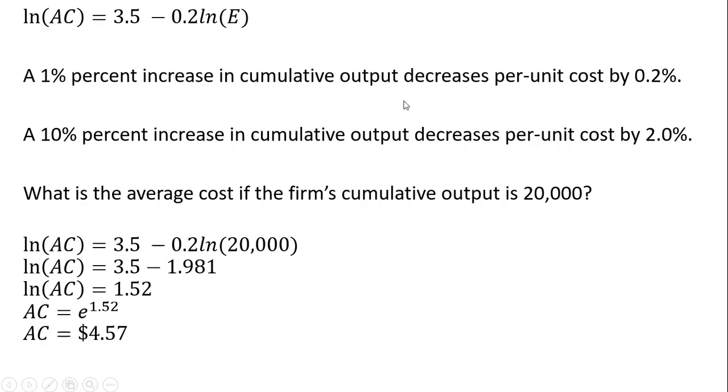So with a cumulative output of 20,000, the per-unit cost is $4.57. At higher levels of cumulative output, average cost will be lower.